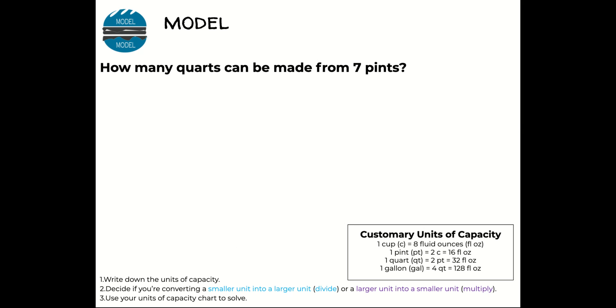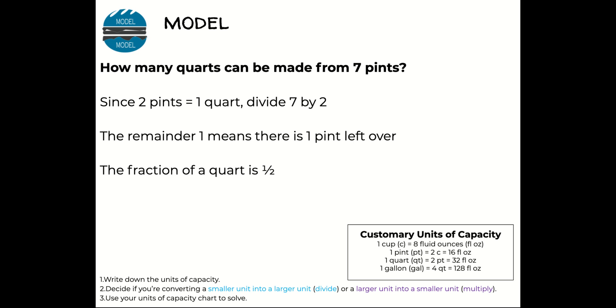Here's one more example before we get started in trying on our own. How many quarts can be made from seven pints? Since two pints equals one quart, we're going to divide seven by two. The remainder one means there's one pint left over. The fraction of a quart is one half. So seven pints is equal to three quarts and one pint, or three and a half, or 3.5 quarts.